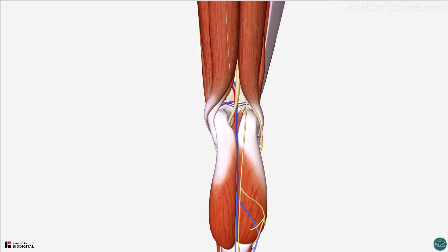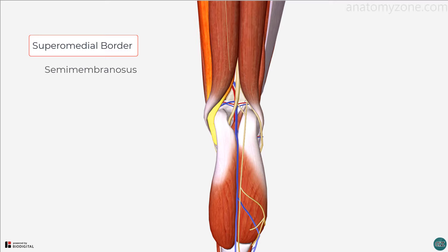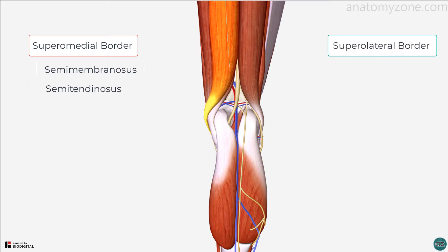The superomedial boundary of the popliteal fossa is formed by the distal ends of the semimembranosus and the semitendinosus muscle. Remember, membranosus is medial, tendinosus sits on top. Superolaterally, the boundary is formed by the biceps femoris muscle.